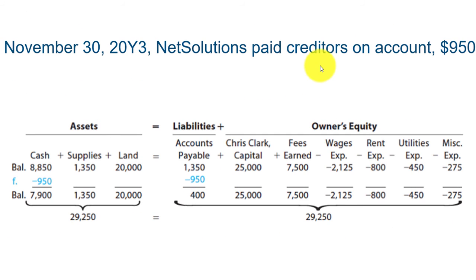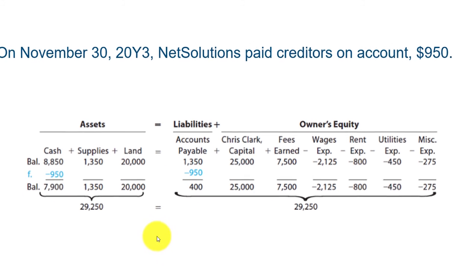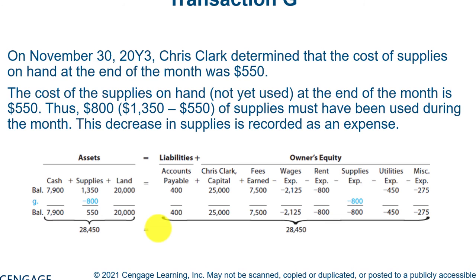Next, we're going to pay that supplier for those supplies we bought earlier. As you pay them, your assets go down — cash goes down — but your liability also goes down. Notice how it still balances. At the end of the month, you determine the cost of supplies on hand, which is $550.